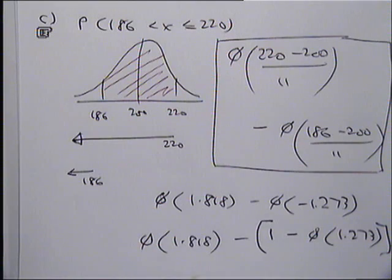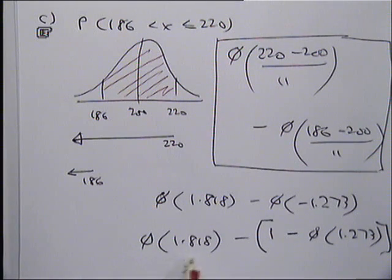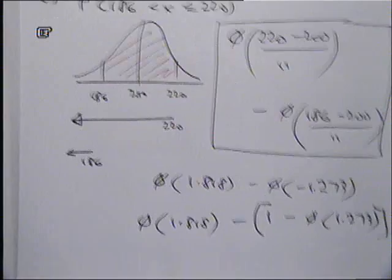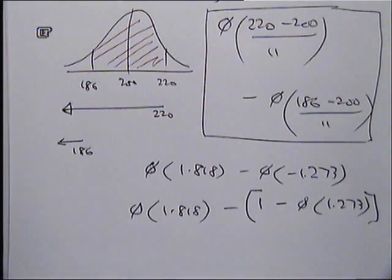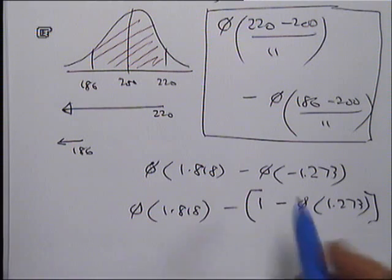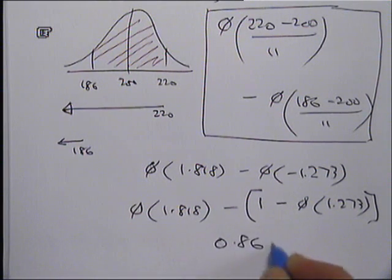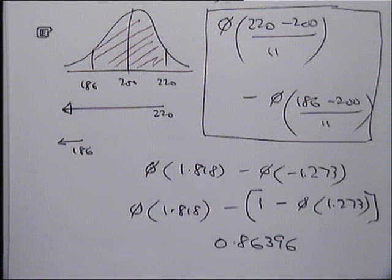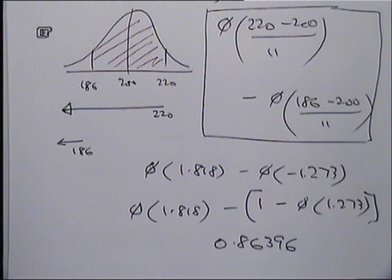Now if you're using a graphics calculator, you can basically do P of 1.818 minus, open bracket, 1 minus P of 1.273, and you'll get your answer straight out. If you're doing the tables, well, you'll need to do two lookups. The calculator gives 0.86396. So that's how you do probabilities between two values in these questions.